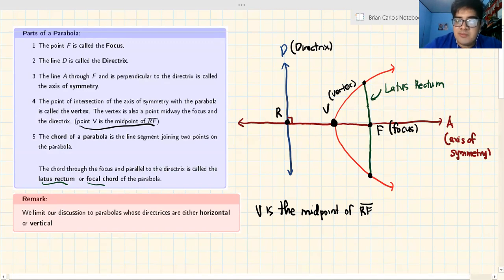Now we have identified the parts of the parabola: the focus, the fixed point, the fixed line, the directrix, the axis of symmetry, the vertex, the latus rectum, and that's pretty much it.